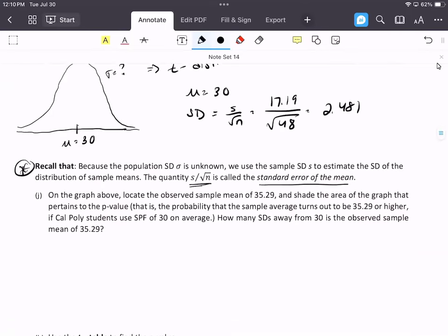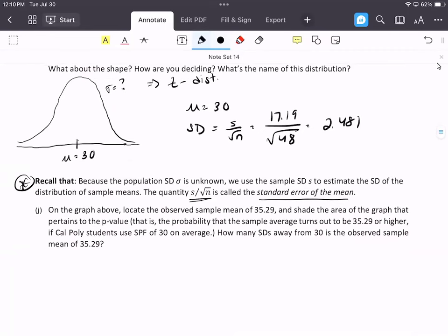On the graph above, locate the observed sample mean of 35.29. Remember, we're wondering how extreme or more extreme, so we're looking at this tail and shaded the area of the graph that pertains to the p-value. That is the probability that the sample average turns out to be 35.29 or higher if Cal Poly students use SPF 30 on average.